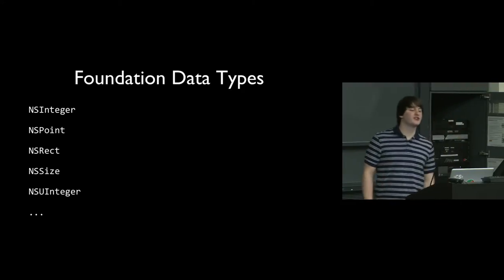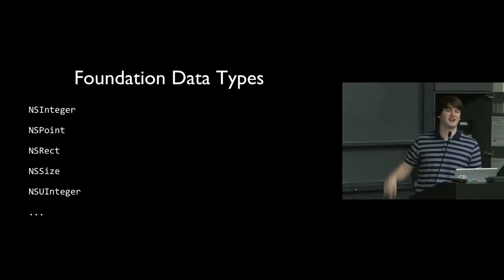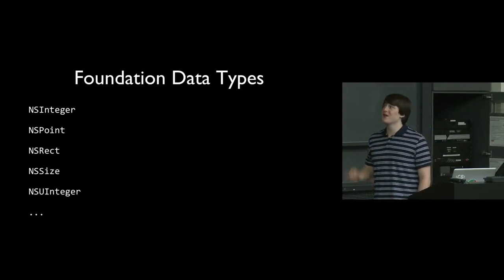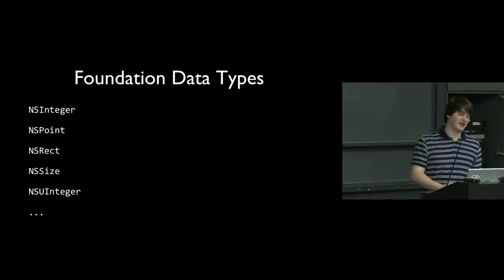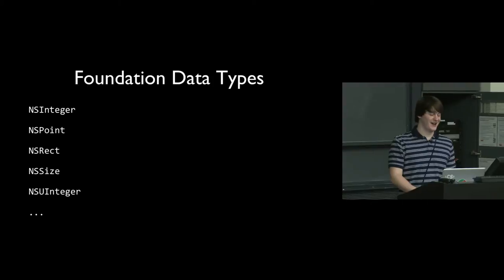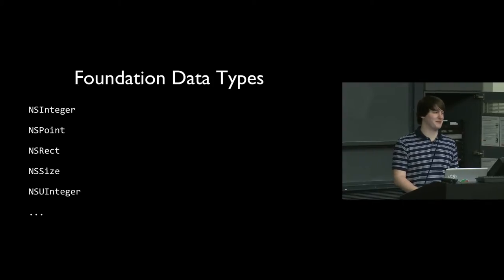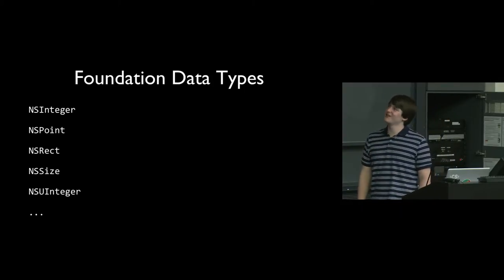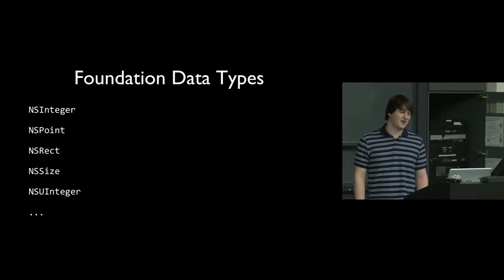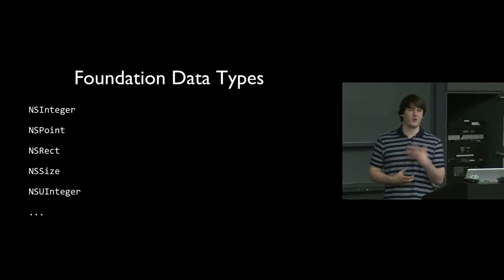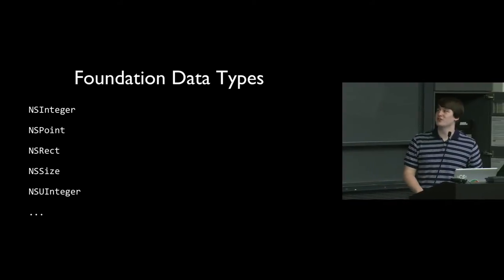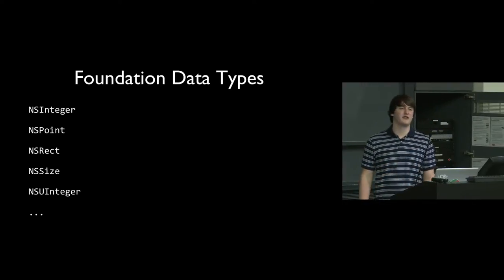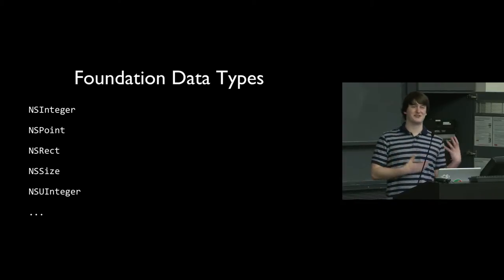When you #import Foundation/Foundation.h, which pretty much everything you're going to be doing will do, you also get some data types: NSInteger, NSPoint, NSRect. These are not objects — this can be somewhat confusing because it can be difficult to differentiate objects from just these typedef'd things. NSInteger exists as a bridge between 32-bit and 64-bit. Pretty much: use it when you're looking at documentation and you see a function that returns an NSInteger.